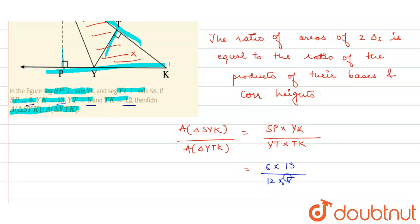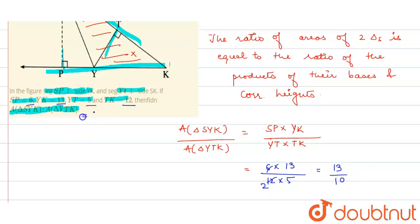We write 12 into 12, giving 13 divided by 10. So the ratio of the two areas is 13 to 10. Here is our answer. Thank you.